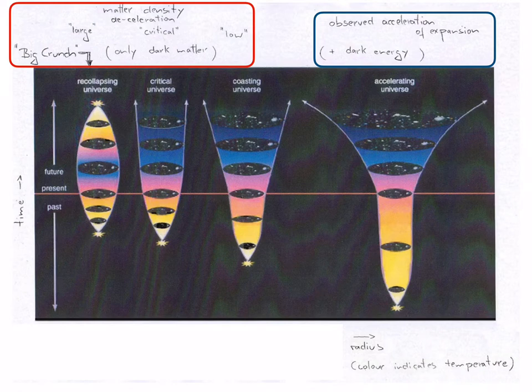The Hubble law and the observed non-linearity for large distances and early times of the universe has important consequences for our understanding of the Big Bang cosmology. Principally, there are four possibilities that are illustrated on this view graph.